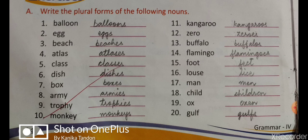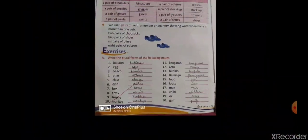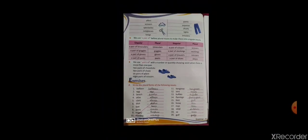Dish becomes dishes, box becomes boxes, army becomes armies, trophy becomes trophies, monkey becomes monkeys, kangaroo becomes kangaroos, zero becomes zeros, buffalo becomes buffaloes — you can also write B-U-F-F-A-L-O-E-S — flamingo becomes flamingos, foot becomes feet, loaf becomes loaves, louse becomes lice, man becomes men, child becomes children, ox becomes oxen, gulf becomes gulfs.